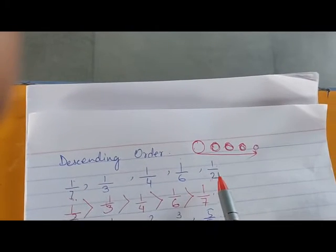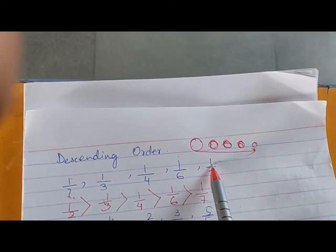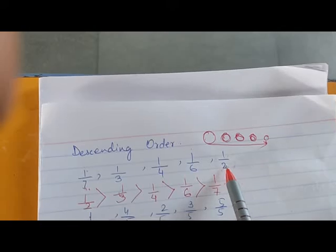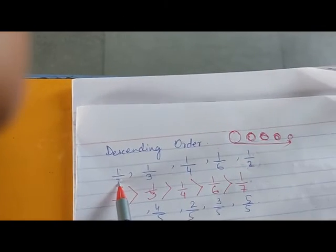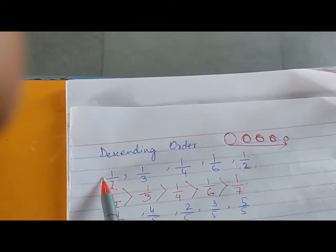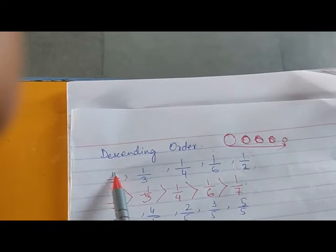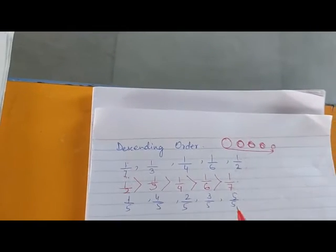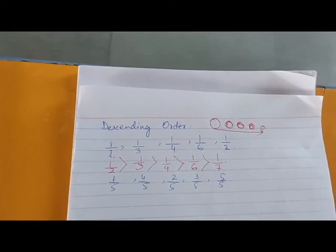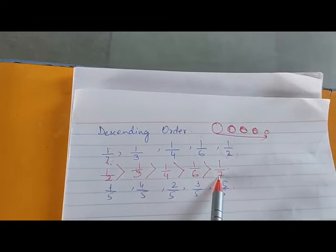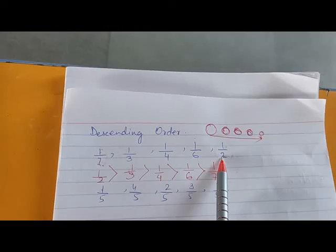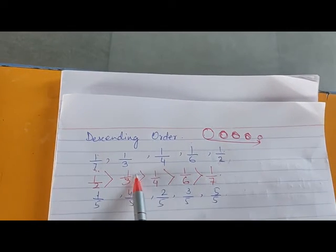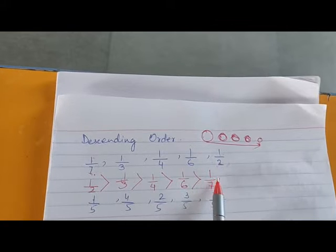1 upon 7 is the smallest because you are dividing something into 7 parts and taking only 1 part. Obviously, if you divide into 2 parts, each part is bigger compared to when you divide into 7 parts and take 1 part. So 1 by 2 is the largest and 1 by 7 is the smallest — we have arranged from the largest fractional number to the smallest.